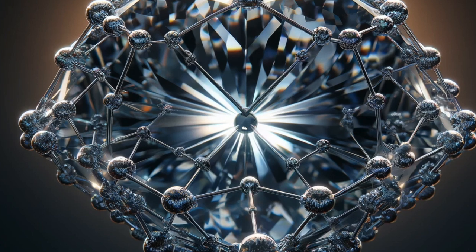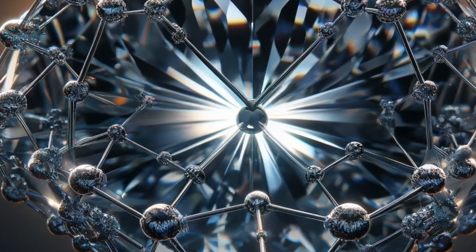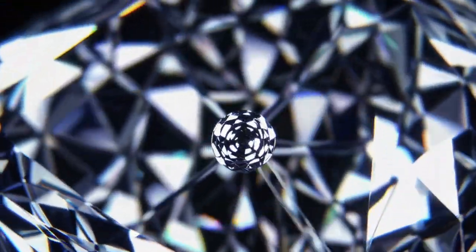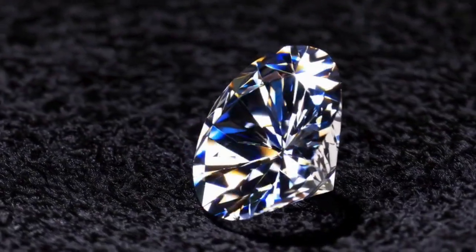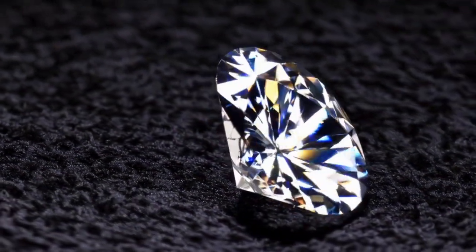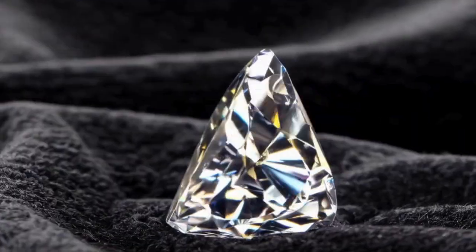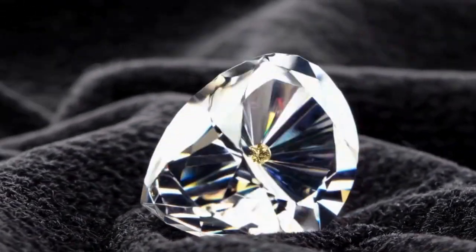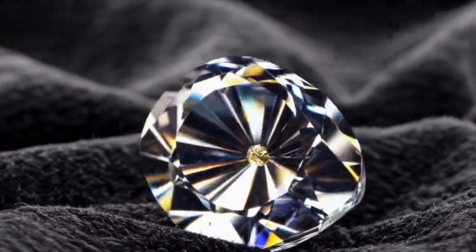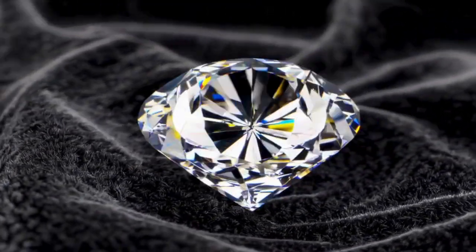In the Delft experiment, the solid-state system used was a special crystal structure containing defects known as nitrogen vacancy centers in diamond. Let's break this down further. Imagine you have a perfectly smooth and flawless diamond. Normally, diamonds consist purely of carbon atoms. However, sometimes, tiny imperfections or foreign atoms appear in this structure.